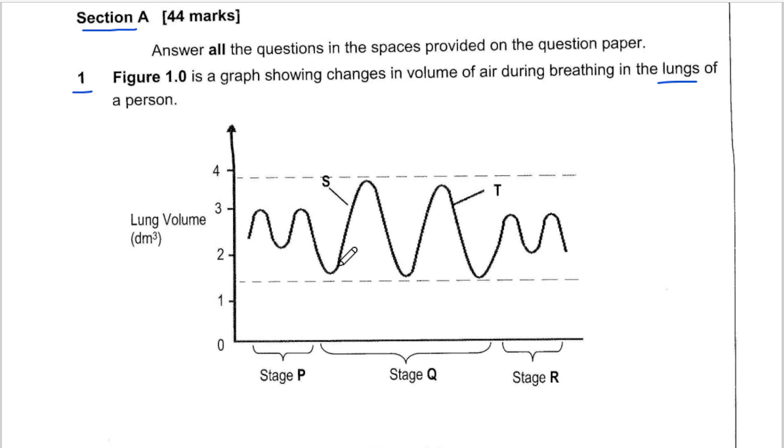Here we are seeing the oscillations on how the volume is changing over time and we have labels S and T, then we go to stages P, Q and R. Let's look at the questions which we are now asked under question 1.